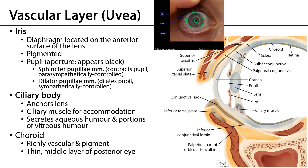There are also ciliary bodies. These ciliary bodies are not visible from the outside; we can see them here in this sagittal section. The ciliary body anchors the lens in place. The ciliary body also contains ciliary muscle, which is smooth muscle that activates for the purpose of accommodation, or reshaping the lens. The ciliary body secretes the aqueous humor into the anterior chamber and also secretes components of the vitreous humor into the posterior chamber.